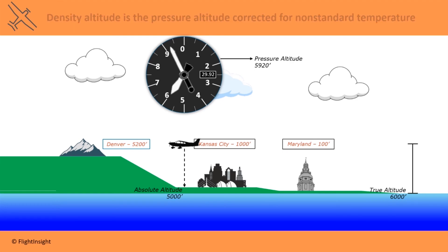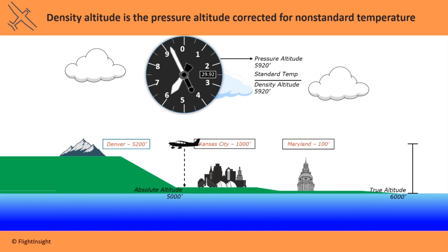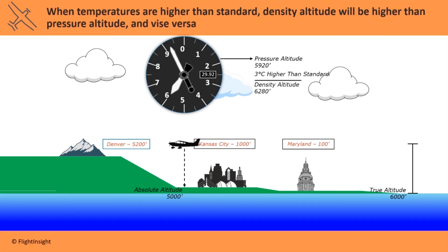Density altitude takes that pressure altitude and adjusts it again for changes in temperature. At standard temperature, density altitude is equal to pressure altitude. As temperature changes, air density changes, and this is what density altitude is used to indicate. So a rise in temperatures to say 3 degrees above standard causes an increase in density altitude, in this case to 6,280 feet.